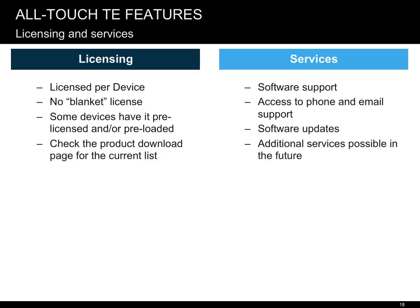Another important thing to know about AllTouch TE is how it's licensed. AllTouch TE is licensed on a per-device basis — each device needs a license, which is tied to that device. Some of our other products offer blanket or site licenses, also known as enterprise licenses, covering a variable number of devices, but AllTouch TE currently doesn't offer that. Some devices may have it pre-licensed and pre-loaded. Note that having the client pre-loaded on the device doesn't automatically mean that it's actually licensed — please check the documentation, such as release notes and spec sheets, to see the current list of supported, pre-loaded, and pre-licensed devices. In addition, the customer would want to ensure that software support services are procured for the product, to ensure access to phone and email support and, more importantly, software updates.